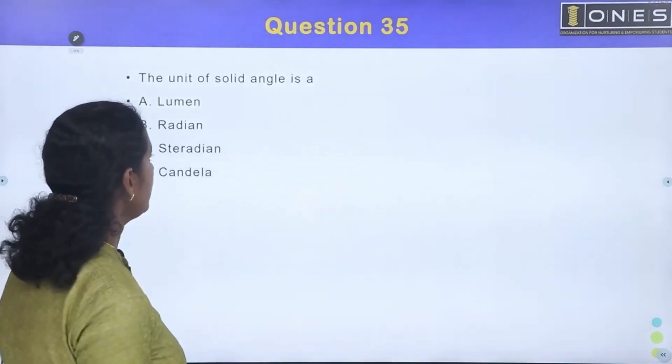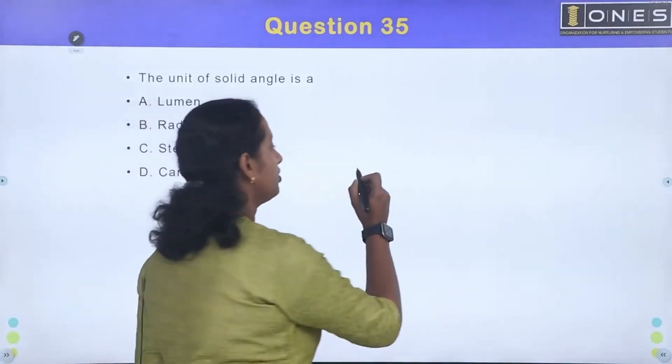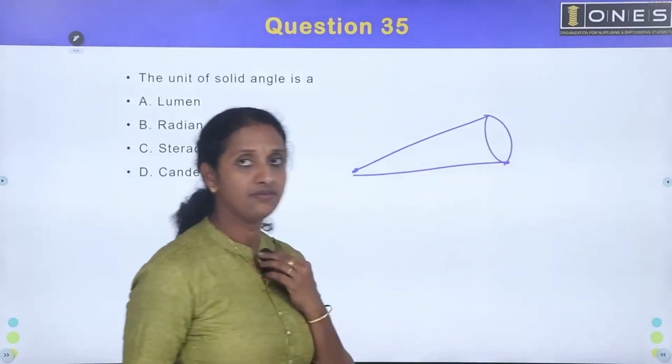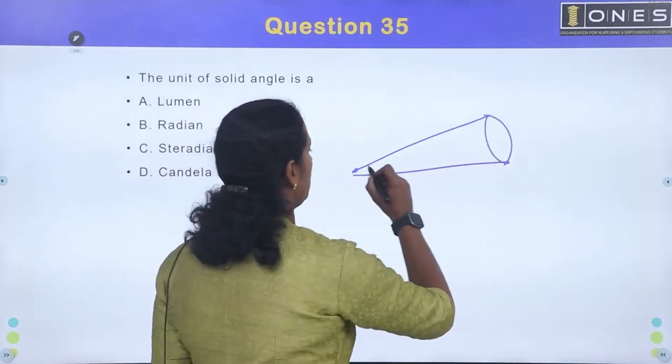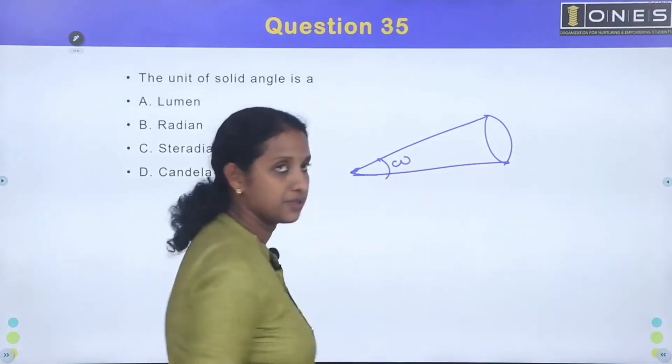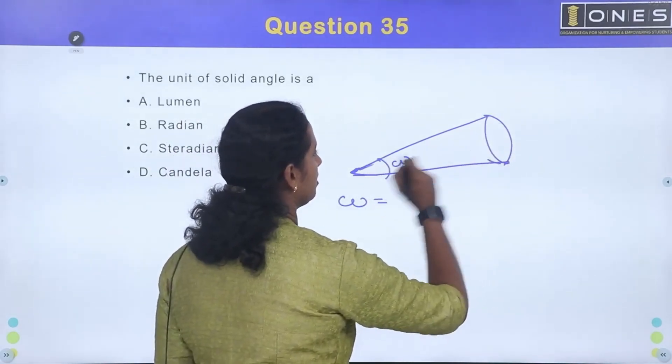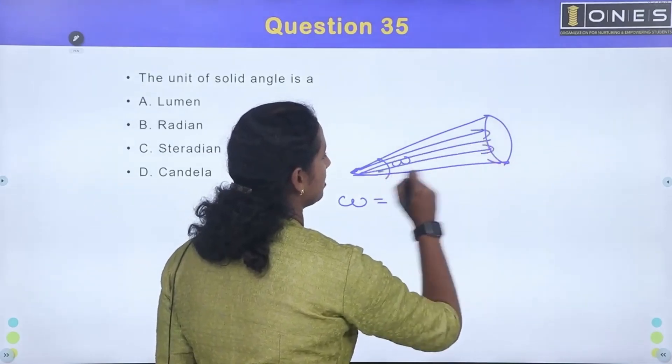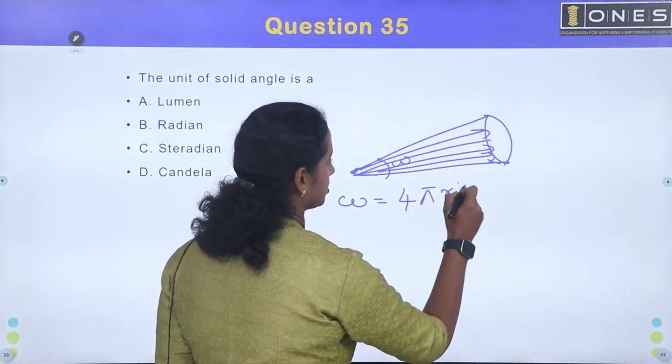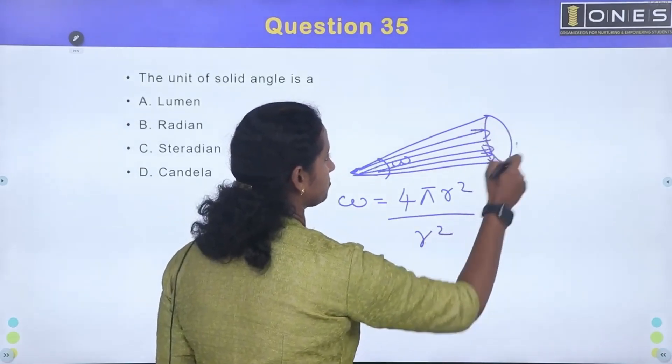Next question - solid angle unit is needed. Solid angle is needed. Here is a torch. Particular area is needed, cover is needed. This is a sphere. This is a solid angle. Omega is needed. Omega is equal to this sphere. Light rays is needed. Area is 4 pi r square. Then, radius in the square of the sphere.